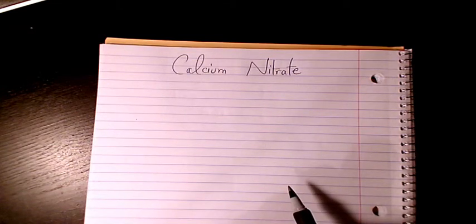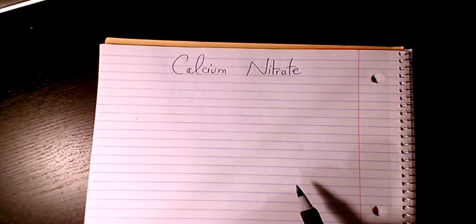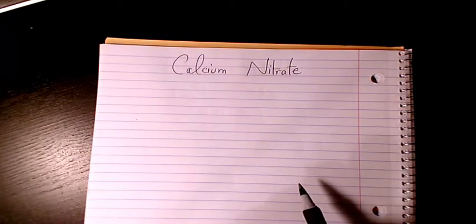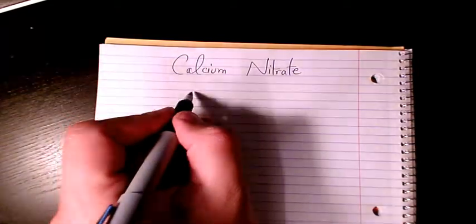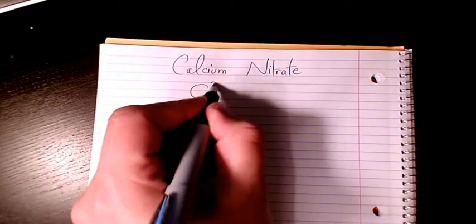What's up guys, this is Massey. Welcome to my channel. In this video I want to show you how to write the molecular formula or chemical formula of calcium nitrate. Calcium belongs to group 2, so it's Ca2+.